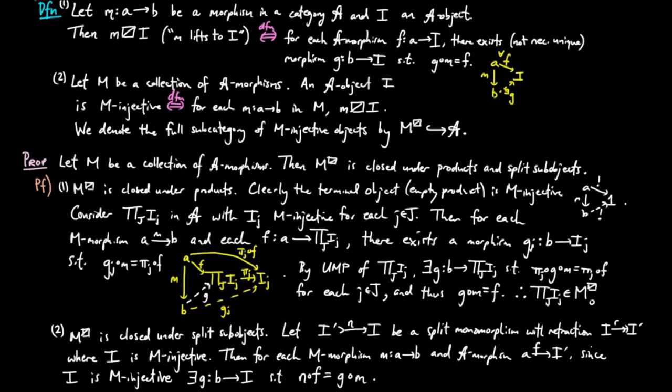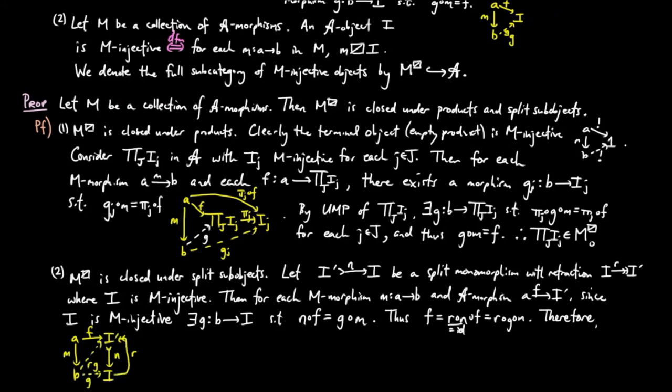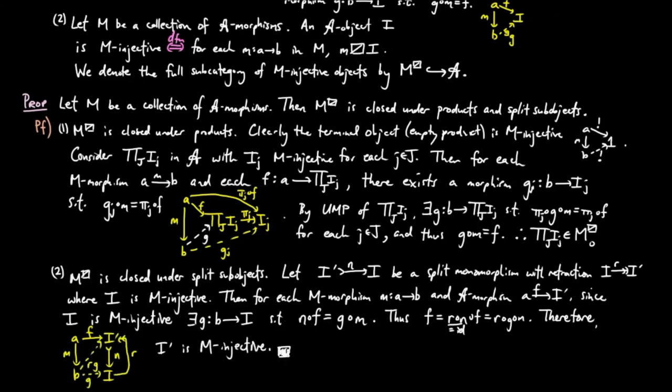Thus, F equals RNF, since RN equals the identity, and that equals RGM. Therefore, RG is a lift, showing I' is M-injective.